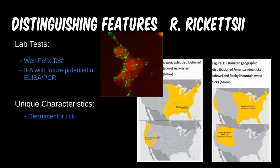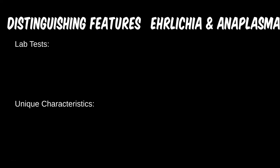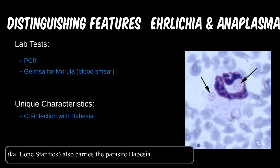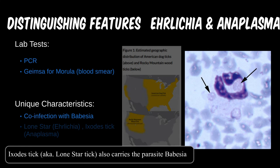RMSF is unique in its rash spread — it usually starts on the periphery with the palms, wrists, and soles or ankles, then moves toward the center of the body. For Anaplasma and Ehrlichia, these are exceedingly rare. PCR is your first choice for either; a morula may be seen on blood smear early in disease — if seen, this is essentially diagnostic. Be aware that co-infections can be a concern, especially with the Ixodes tick.